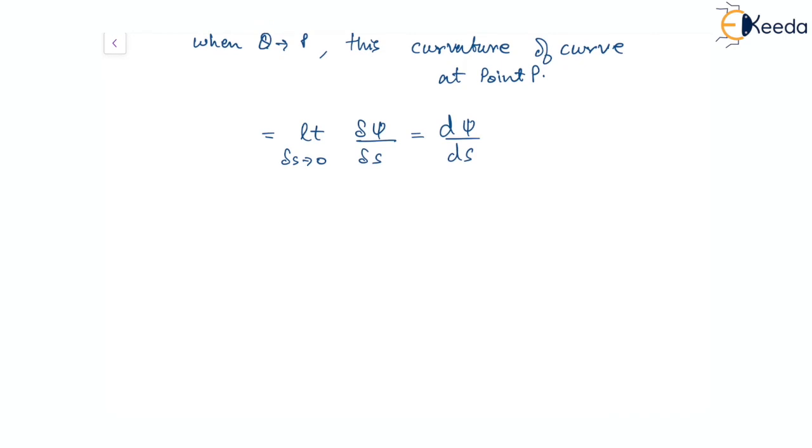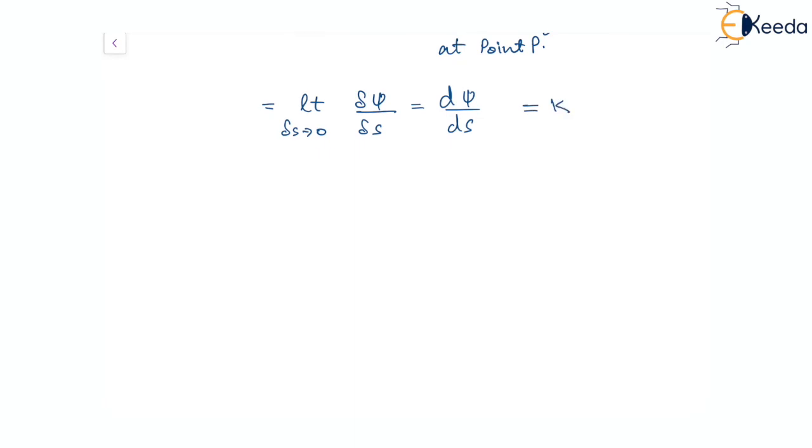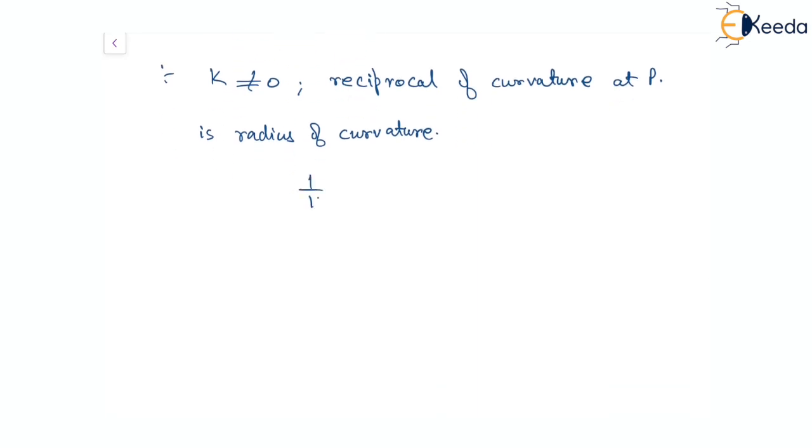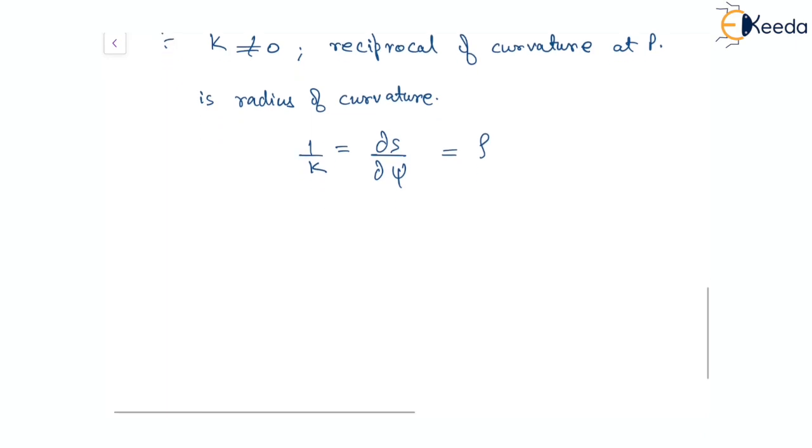This curvature at point P is denoted by k. For k not equal to zero, the reciprocal of the curvature at point P is called the radius of curvature. One over k equals ds over d psi, and this radius of curvature is denoted by rho.